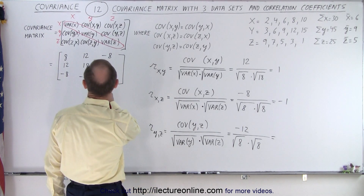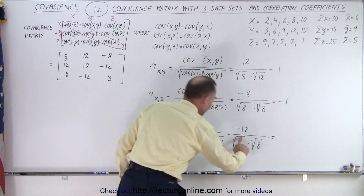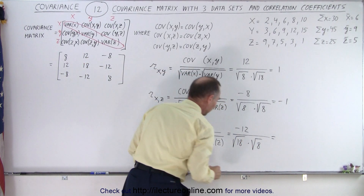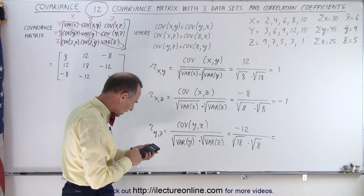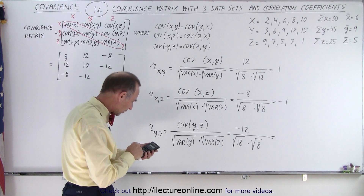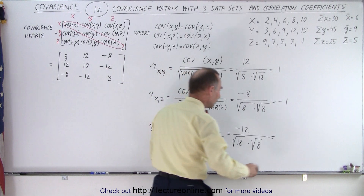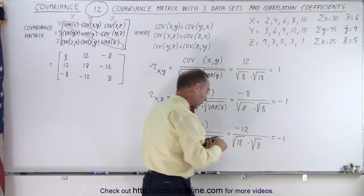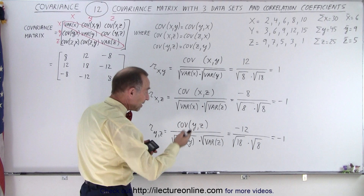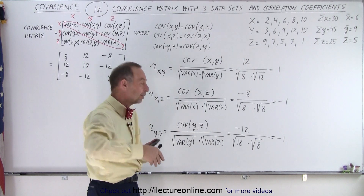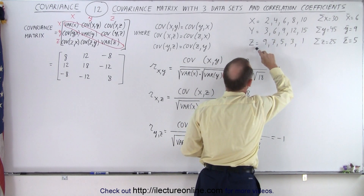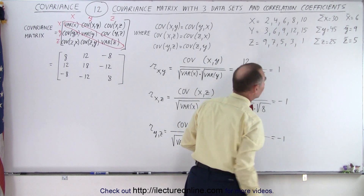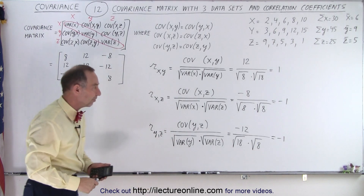The variance of y is right here, which is 18. So we have negative 12 divided by the square root of 18 divided by the square root of 8, and sure enough we end up with negative 1. So again, perfect correlation between the two data sets. Negative means that one is increasing while the other one is decreasing. The y data set is increasing by threes; the z data set is decreasing by twos. Therefore, again, perfect correlation between the two data sets.